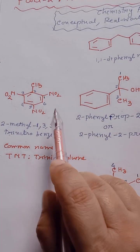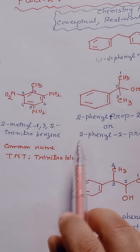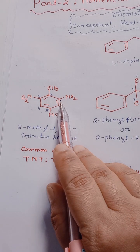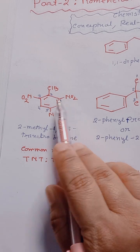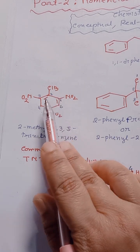Next one, common name is TNT, trinitrotoluene. IUPAC nomenclature: nitro will get the first priority, so we have to give the number 1 either right-hand side nitro or left-hand side nitro, and methyl will get the second numbering.